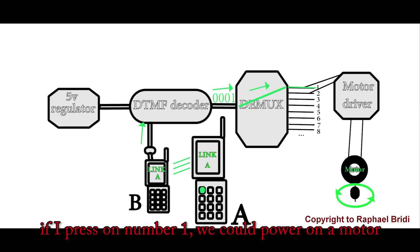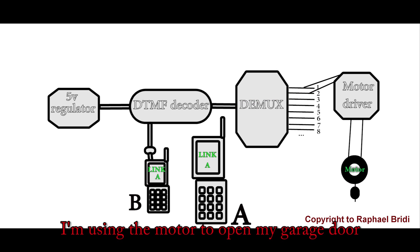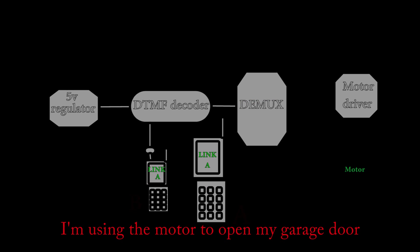If I press number 1, we could power on a motor. And pressing number 2 will make the motor spin backward. I'm using the motor to open my garage door.